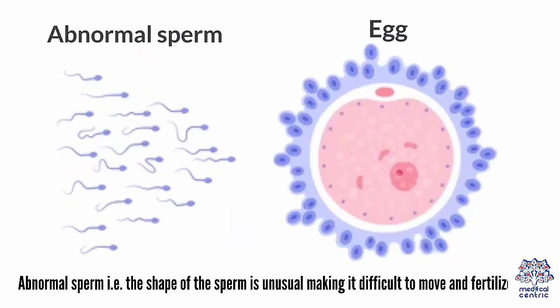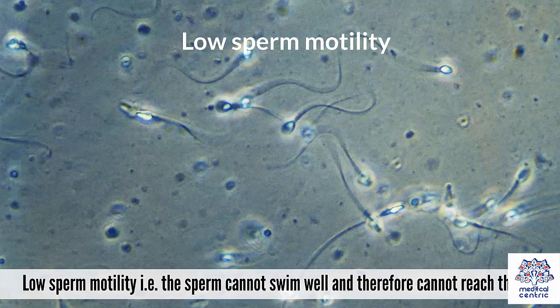Abnormal sperm — for example, the shape of the sperm is unusual, making it difficult to move and fertilize an egg. Low sperm motility — for example, the sperm cannot swim well and therefore cannot reach the egg.